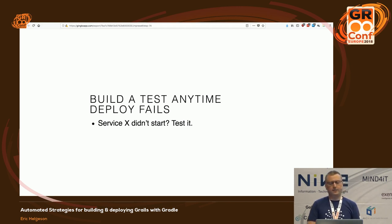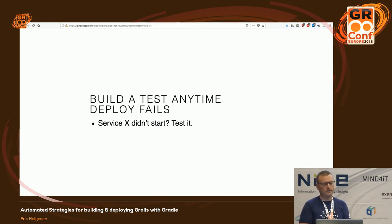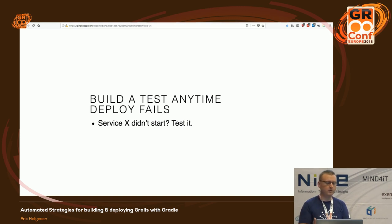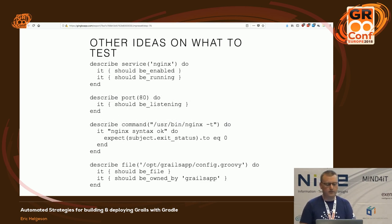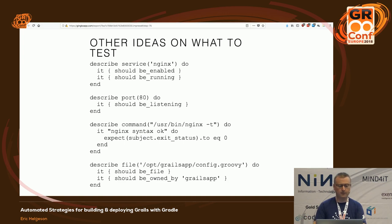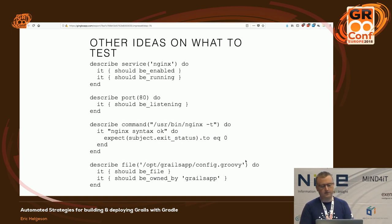When should you write integration tests? Anytime anything fails. If Firewalld was not letting port 8080 in, write an integration test that makes sure Firewalld has the appropriate rule to allow 8080 to be served. Anytime you log into a production server and run a command is a good candidate for integration testing — validate your nginx config is correct, make sure your external config is owned by your Grails app, check ports, and other things like that.